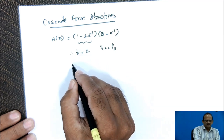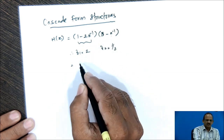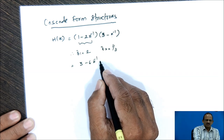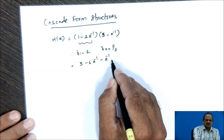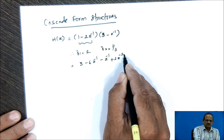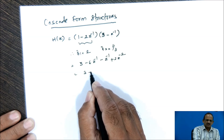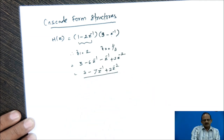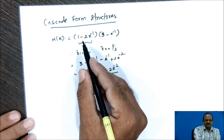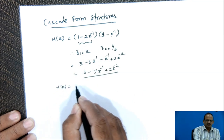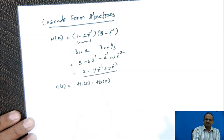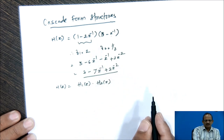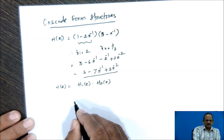Now let us consider multiplying these two terms. We get 1 into 3 as 3 minus 6z raised to minus 1 minus z raised to minus 1 plus 2z raised to minus 2, which gives us 3 minus 7z raised to minus 1 plus 2z raised to minus 2. To understand the cascade form structure, let us consider H of z represented as H1(z) into H2(z).